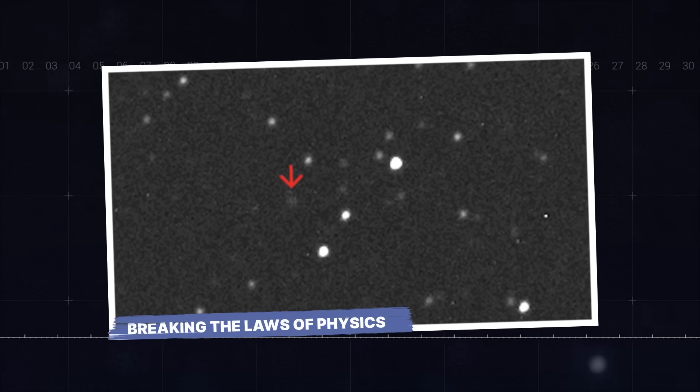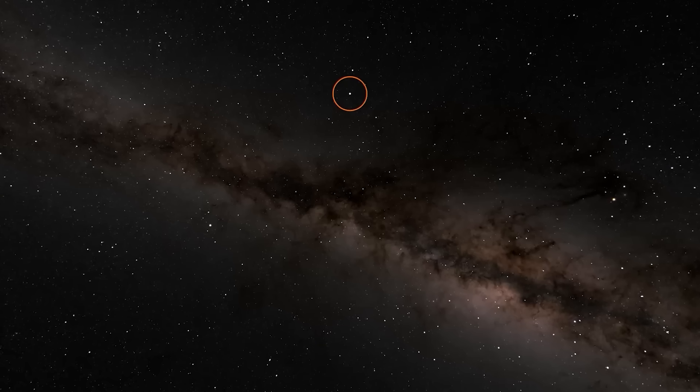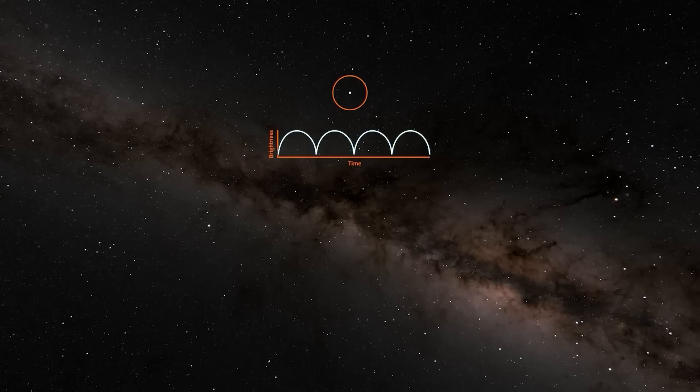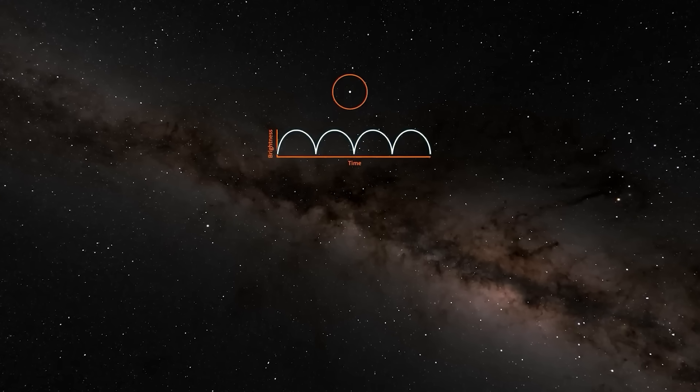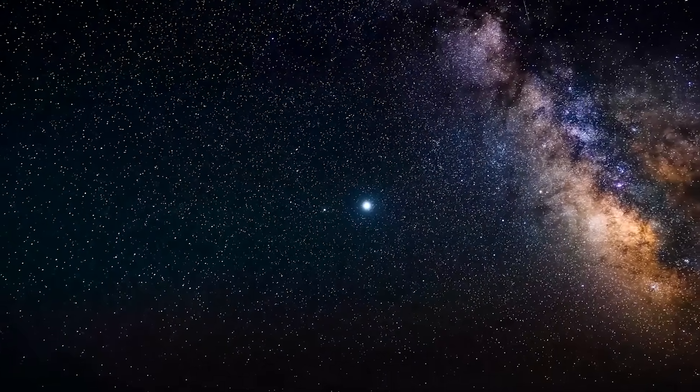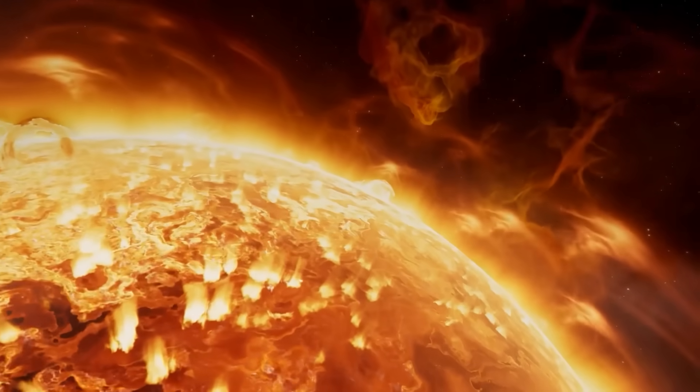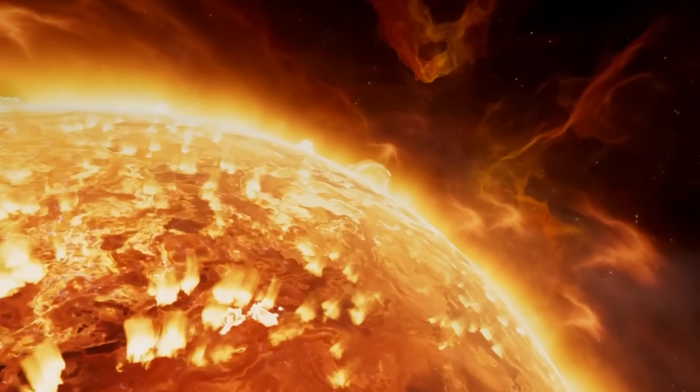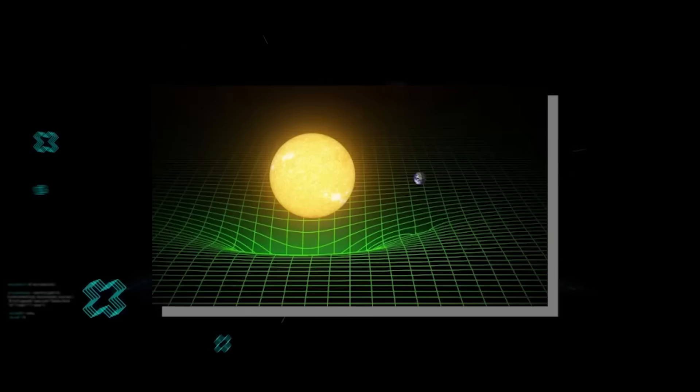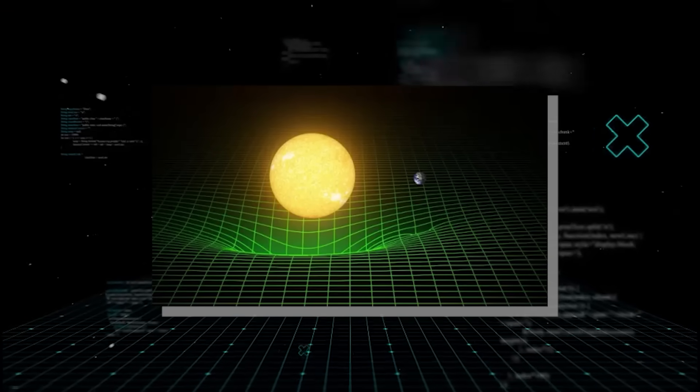Breaking the laws of physics. Let's talk about that push. That strange acceleration that started this whole mystery. When astronomers first clocked it, the force was tiny. About 4 times 10 to the negative 7 meters per second squared. That's an incredibly small number, a push so gentle you would never feel it. But it was constant, and it was pointed directly at the sun. This is what scientists call a non-gravitational force.